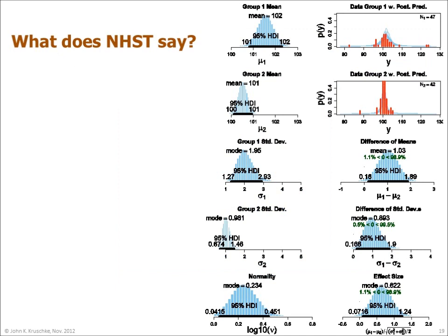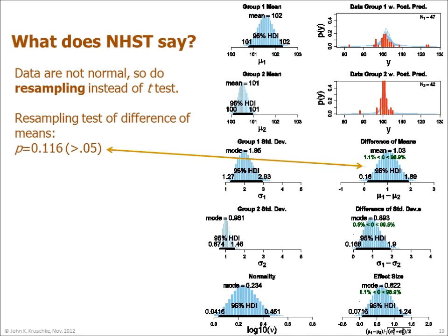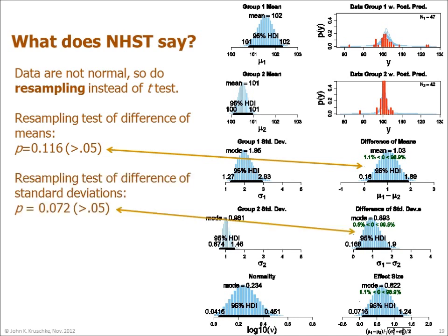Let's contrast the results of Bayesian estimation with what null hypothesis significance testing says. The data are not normal, so we do resampling, also known as bootstrapping, instead of the standard t-test. Resampling uses no parametric model to describe the data. A resampling test of the difference of means yields p equals 0.116, which is greater than 0.05, so we would not reject the null hypothesis. Contrast this with the conclusion from Bayesian estimation, which did reject zero.